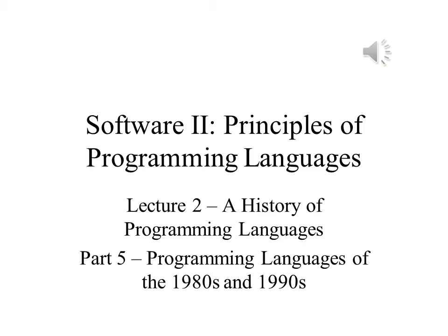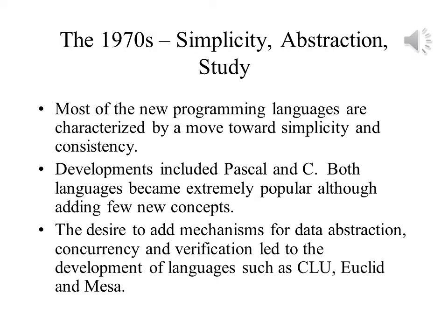In part 5 of this lecture, we will discuss the programming languages that first appeared in the 1980s and 1990s. In the 1970s, there was an effort to make languages simpler and to ensure that syntax and semantics were tied together better. The 1970s led to two languages that became extremely popular: Pascal and C. Despite their popularity, neither language added to the many new concepts of programming language design.